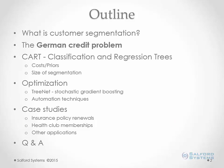A quick outline of what we'll be going over today: we'll talk about what customer segmentation is, then introduce the German credit problem, which is the data set we'll be looking at. We'll talk about CART — Classification and Regression Trees — and different parameters to optimize your customer segmentation. Then we'll look at TreeNet, the Stochastic Gradient Boosting Engine that can boost accuracy of your segmentation, and go over some automation techniques. We'll also look at case studies on insurance policy renewals and health club memberships.